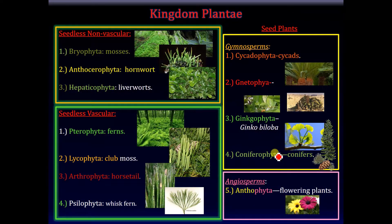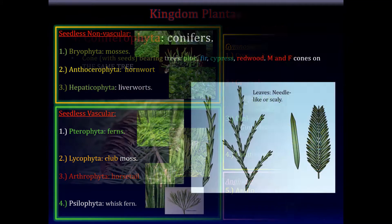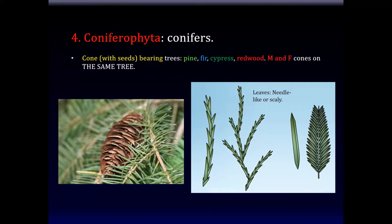Among the gymnosperms, the fourth category — a very, very important category — are the conifers, or Coniferophyta. The conifers, of course, have cones. These include the pine tree, the fir tree, the cypress, and the redwoods. In these plants, the male and female cones are on the same tree, so you'll see a conifer with two types of cones — one male cone and one female cone. The conifers can be distinguished among themselves by the type of leaves they have — the two main categories are needle-like leaves and scale-type leaves, as you see before you.